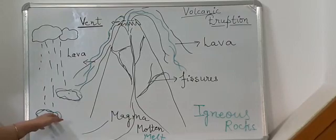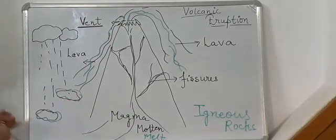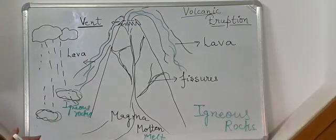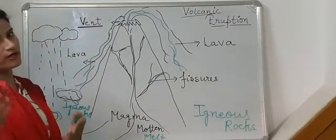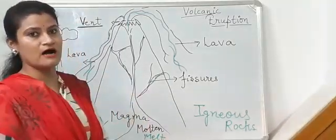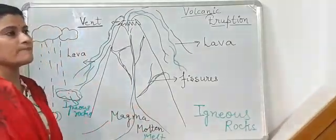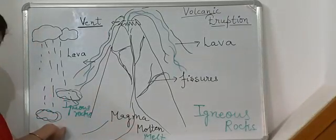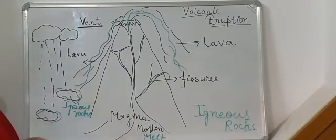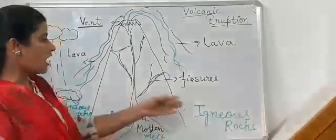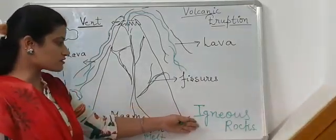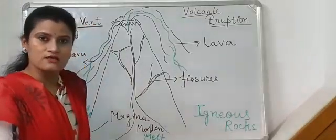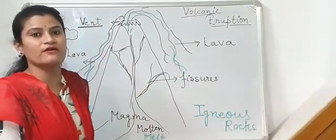With heavy rainfall the igneous rocks start breaking into pieces and flow with the water — maybe into a nearby fountain, river, or spring. So these igneous rocks, broken into pieces, flow with the water. Next we'll talk about sedimentary rocks — how igneous rocks formed first, and now how sedimentary rocks are formed from them.